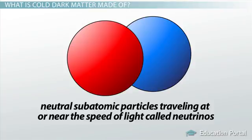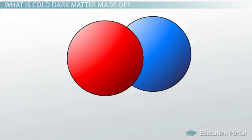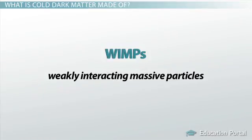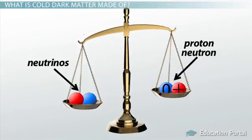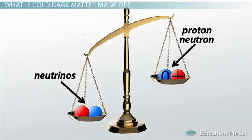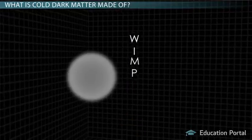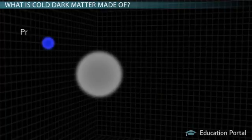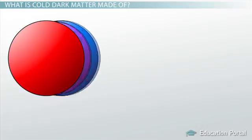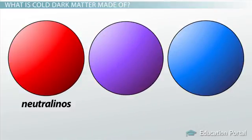Cold dark matter might include WIMPs, or weakly interacting massive particles. These are theoretical subatomic particles that have masses that are about 10 to 10,000 times greater than a proton or neutron and hence exert a gravitational force, but otherwise only weakly interact with ordinary matter. Hypothetical WIMPs include crazy-sounding things like neutralinos, gravitinos, and axinos.